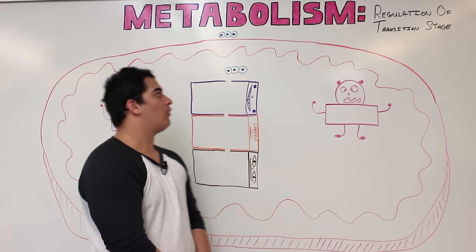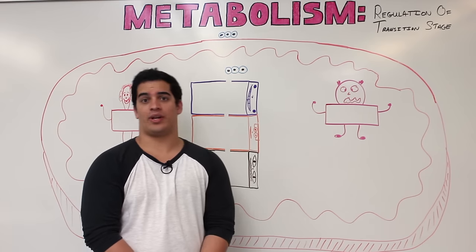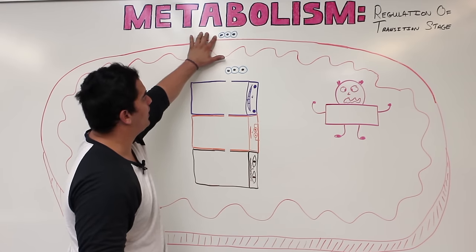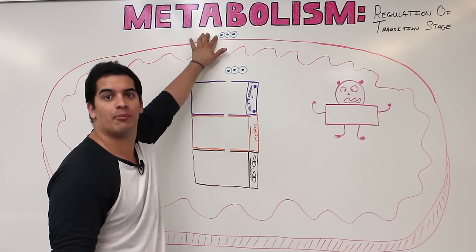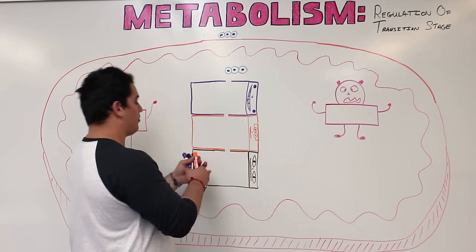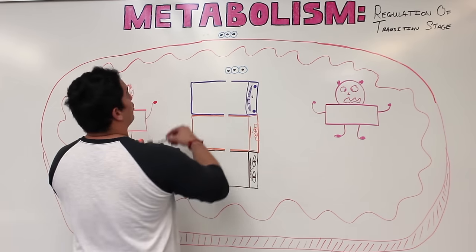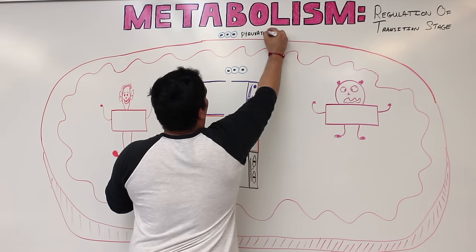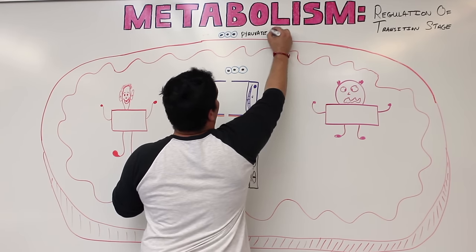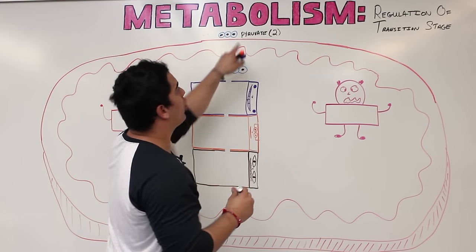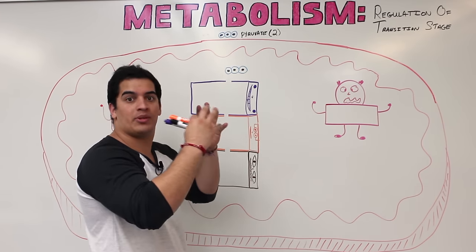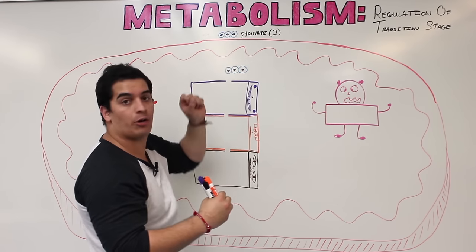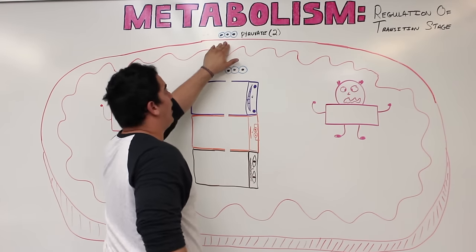In this video we're going to go over in great detail the regulation of the transition stage. Pyruvate is formed as the end product of glycolysis — it's a three-carbon molecule, and you actually get two of them because glucose was the six-carbon starting reactant, and the end product was two pyruvate molecules.